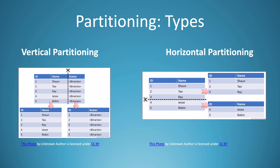There are two ways of partitioning — we'll have another lecture on this. In vertical partitioning, we divide by columns: for example, a table with columns id, name, and avatar can be split into id-name and id-avatar partitions — each column group in a different partition. In horizontal partitioning, the division is by rows: for instance, with users Sean, Tao, Ray, Jesse, and Robin, the first three IDs go into one partition and the other two into a different partition. That is horizontal partitioning.